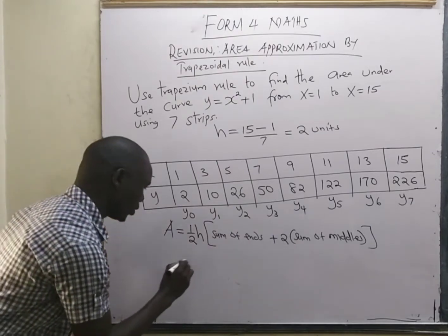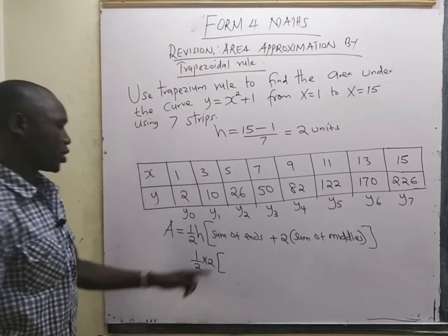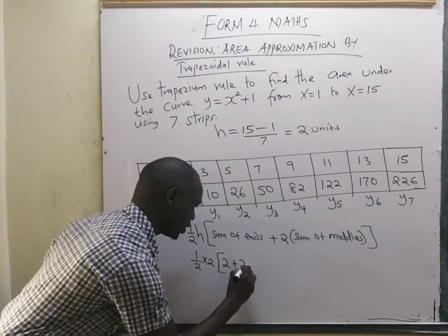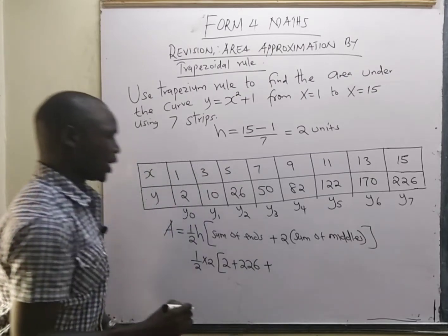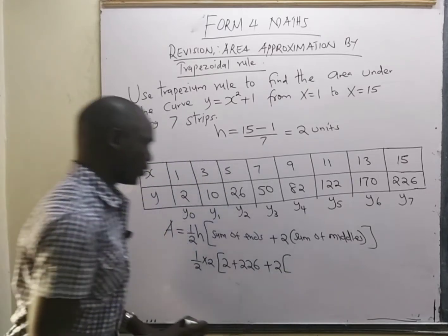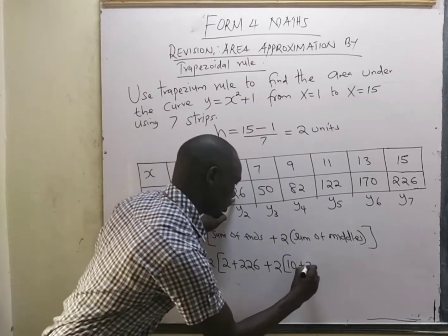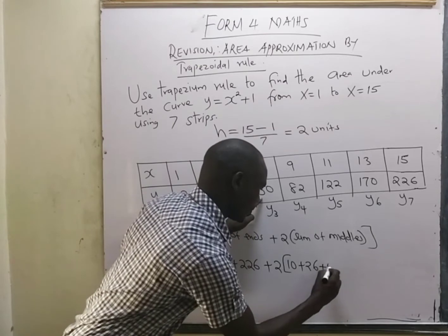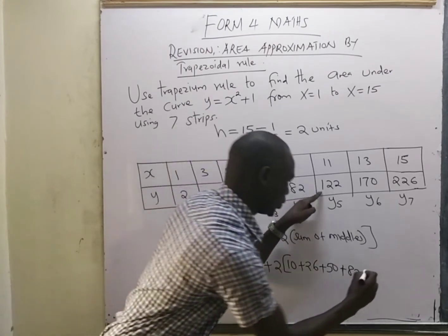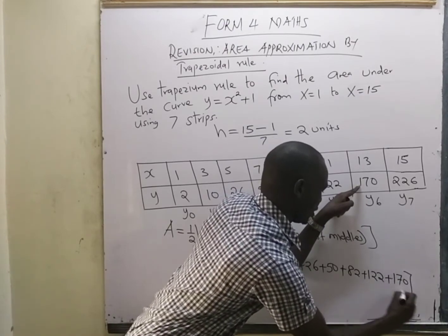We now substitute: Area = ½ × 2 × [(2 + 226) + 2 × (10 + 26 + 50 + 82 + 122 + 170)].